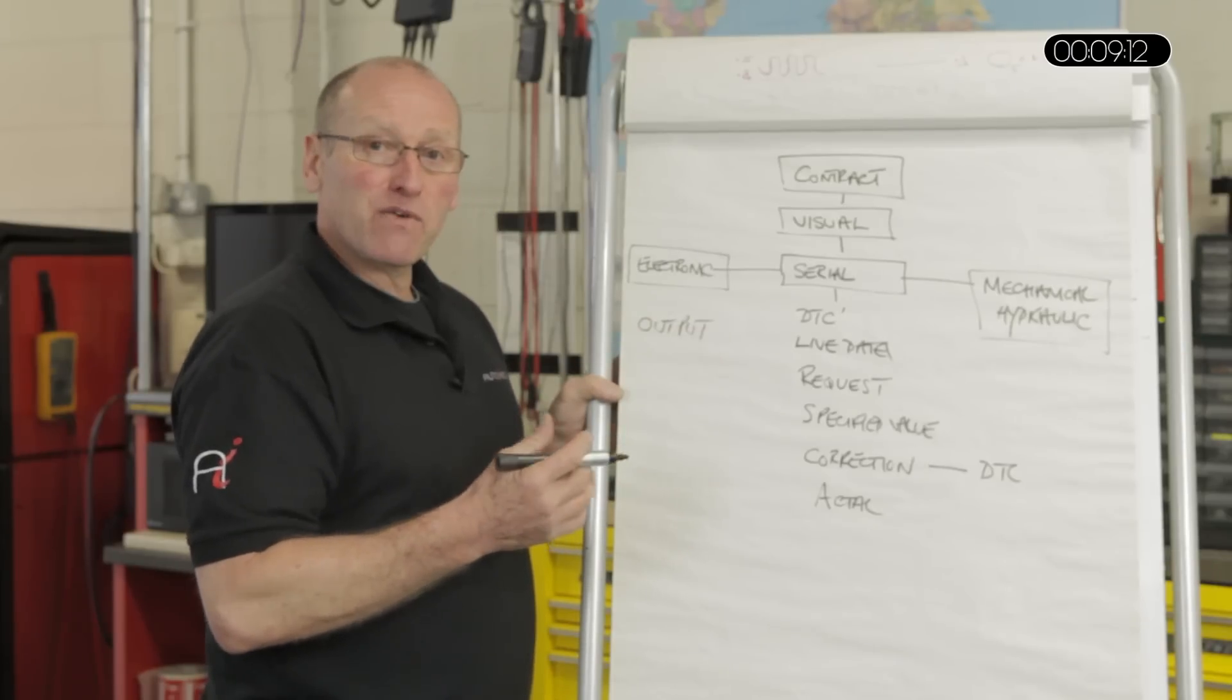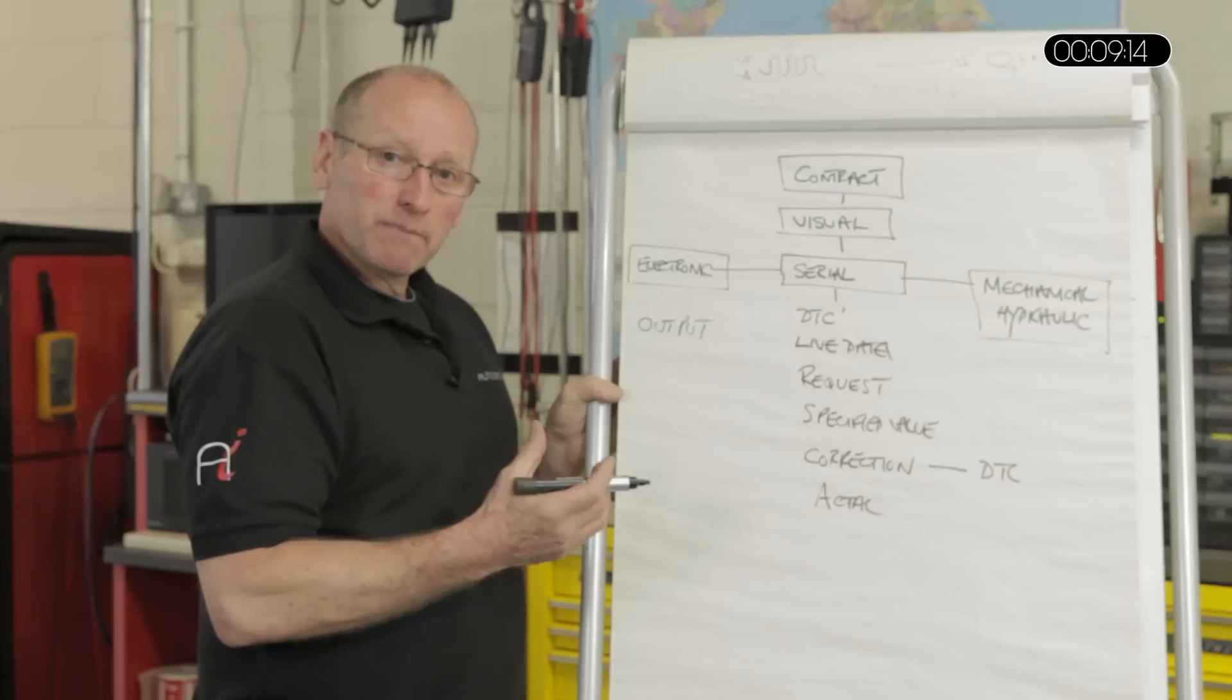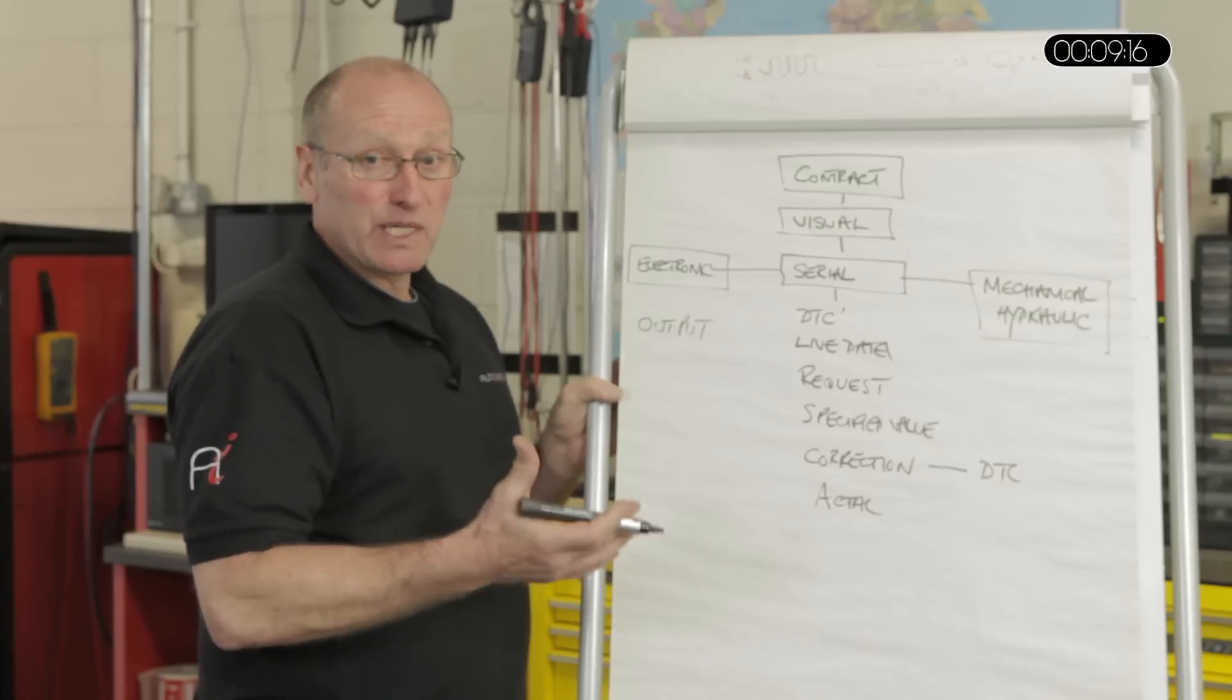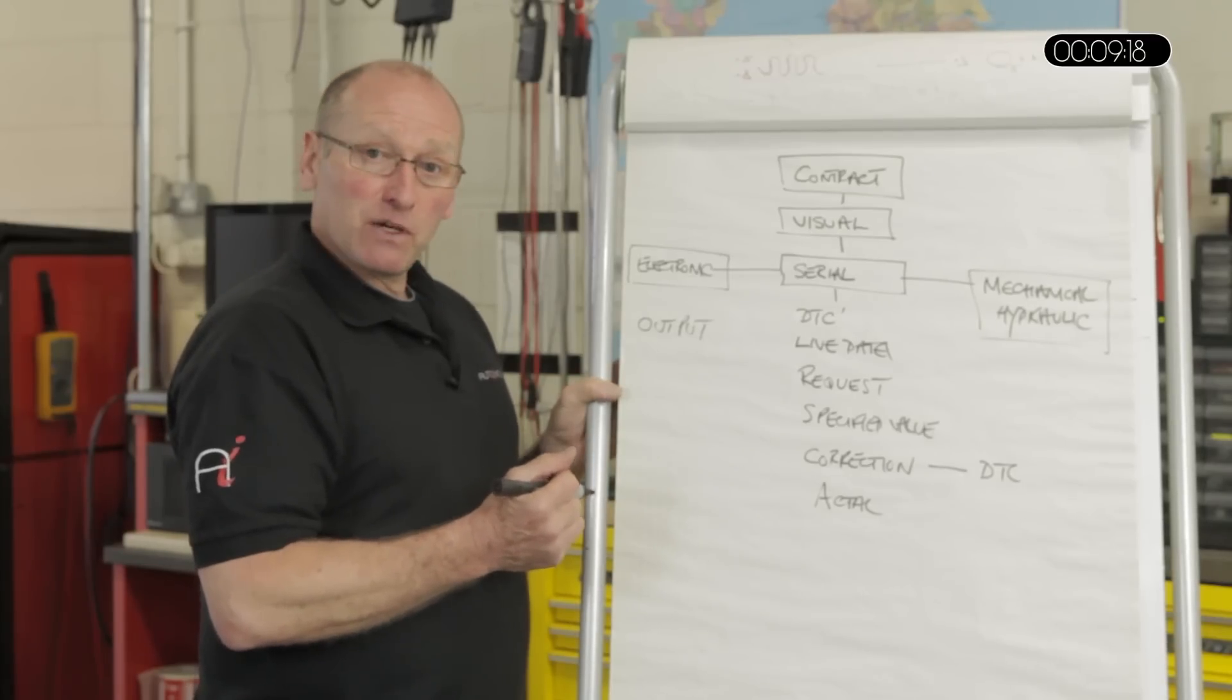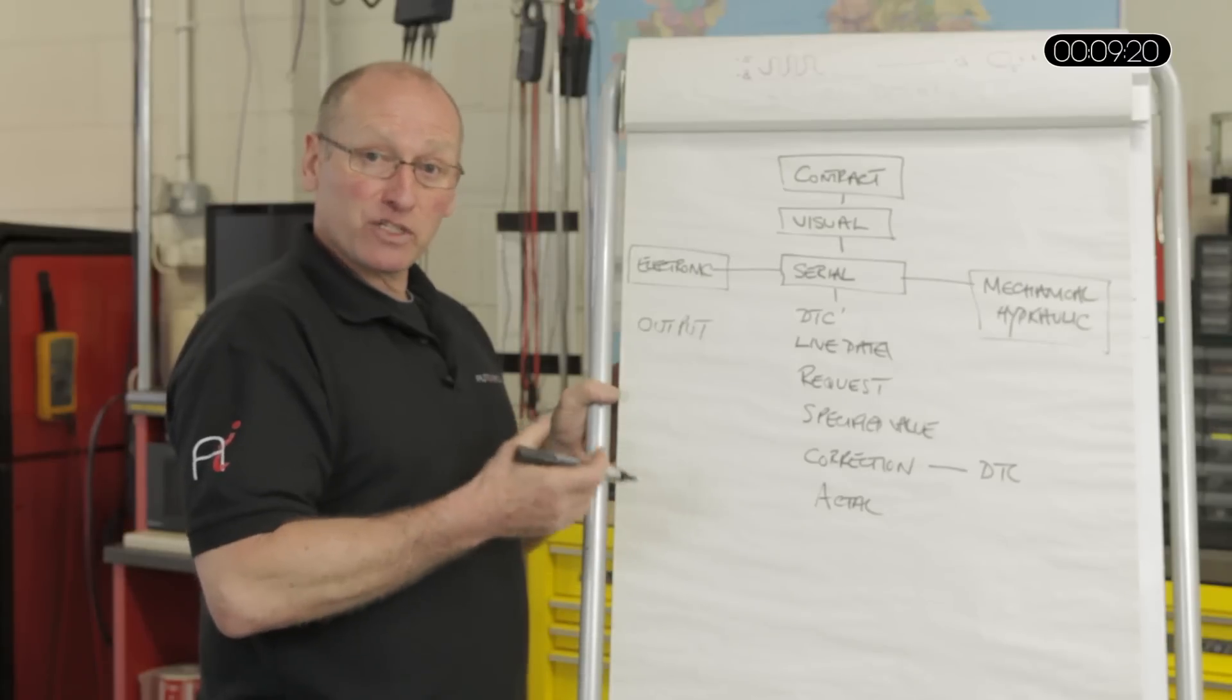You also have to use the correct method of measurement. If it's voltage in real time, we use the oscilloscope. If it's current flow, then we also use the oscilloscope with inductive current clamp.